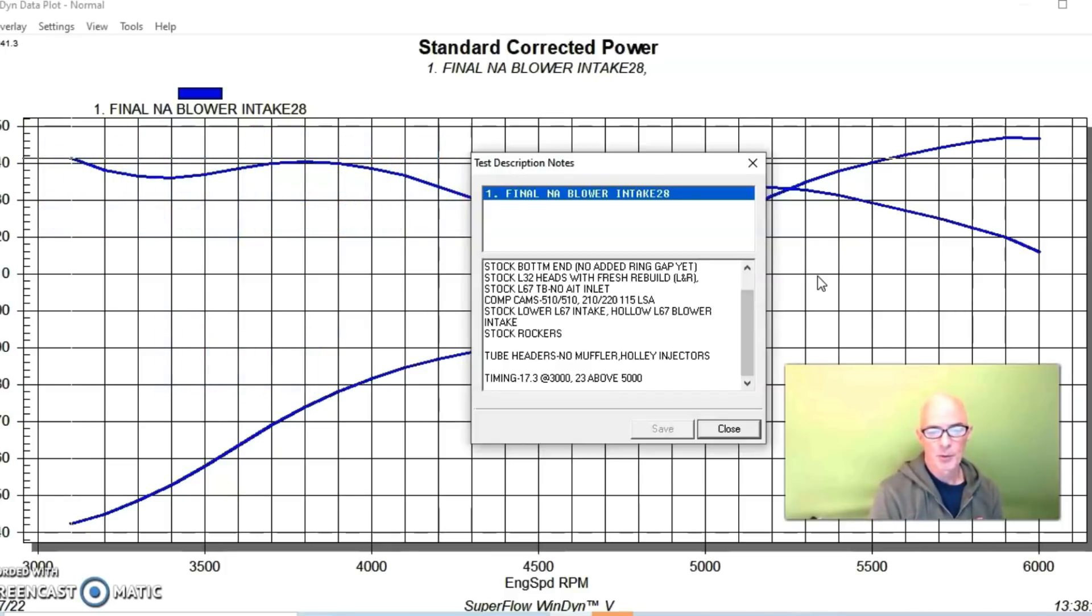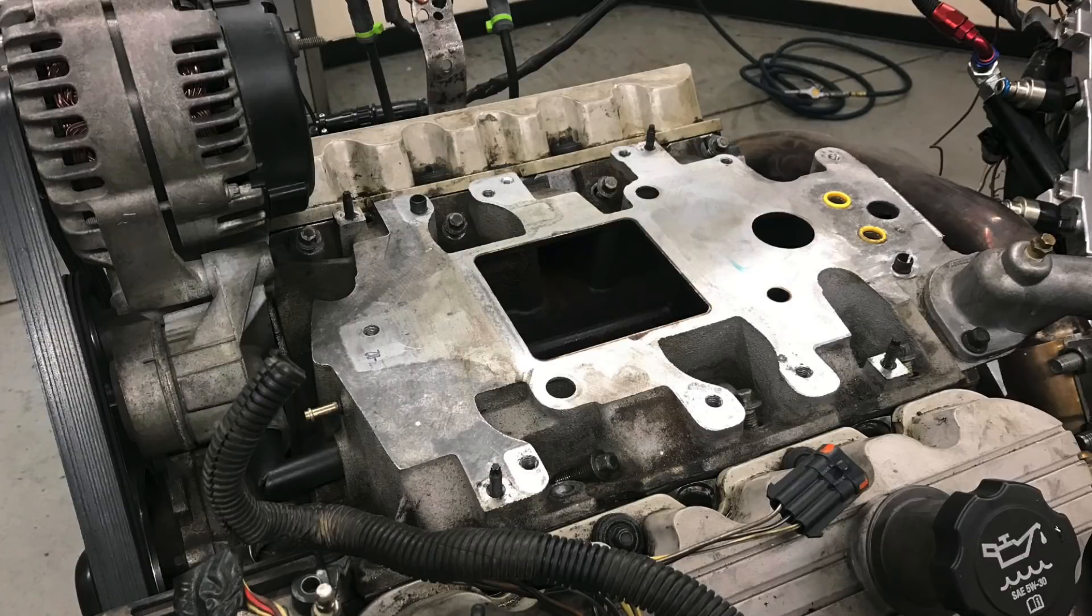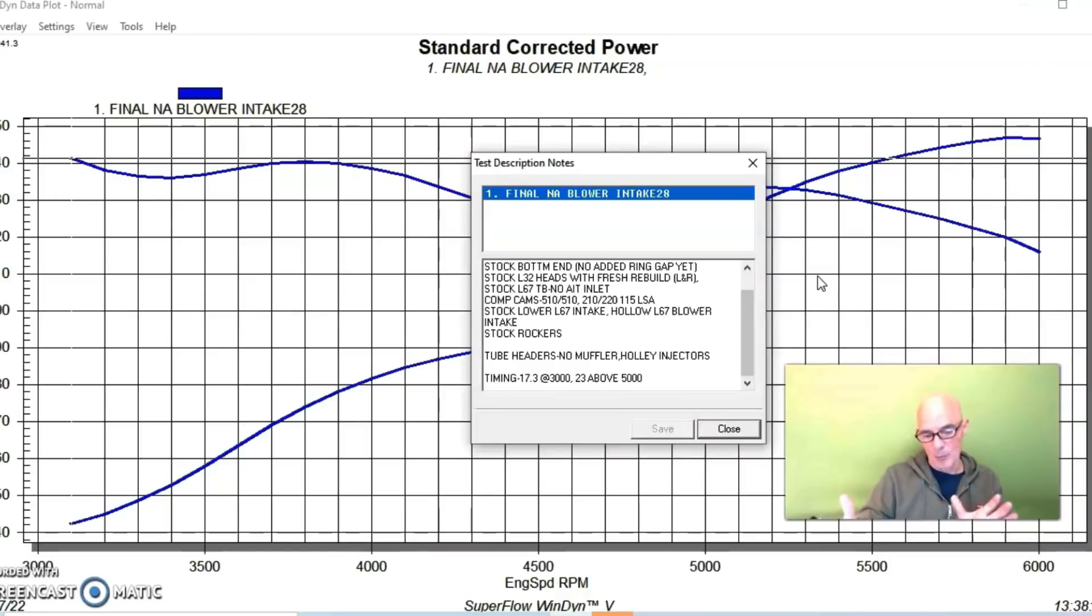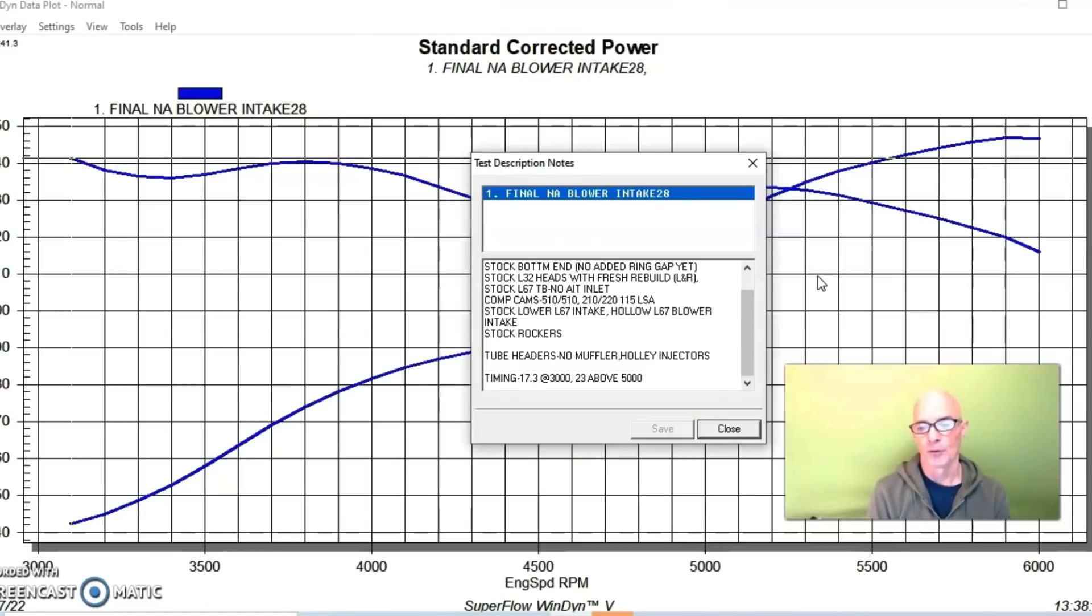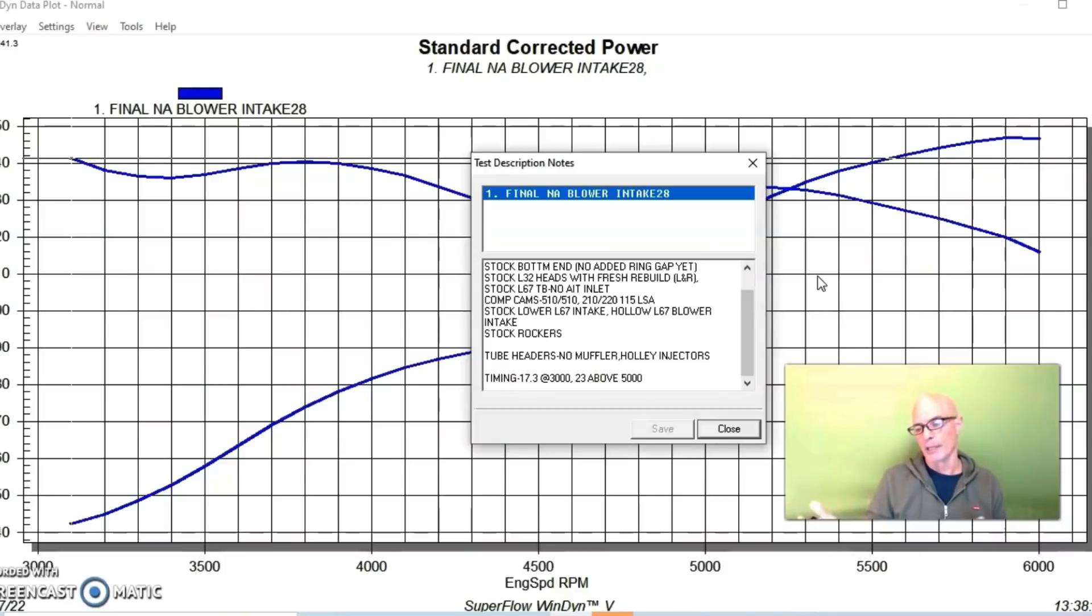On this combination, we ran the lower L67 intake manifold, the blower intake manifold, and then we hollowed out the upper section. The plenum basically removed the rotor pack from the M90 supercharger, used that with a cover plate as the upper portion of the manifold for our NA combination. We used the factory mass air and throttle body assembly,